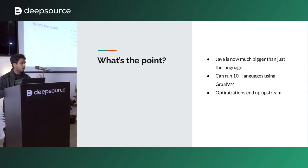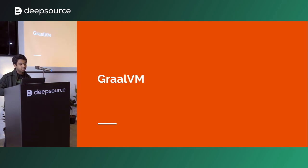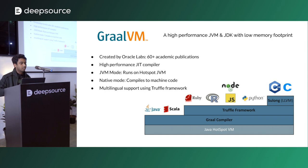GraalVM optimizes heavily on the languages it runs, and these optimizations end up upstream. For example, GraalVM made an optimization in Python that ended up improving Ruby. So let's look into what GraalVM actually is.